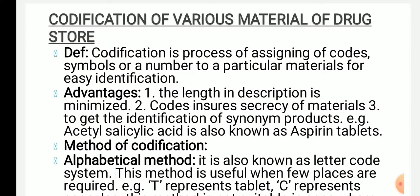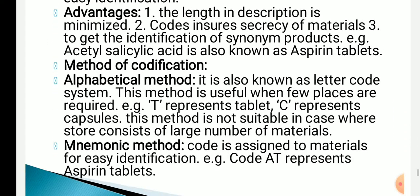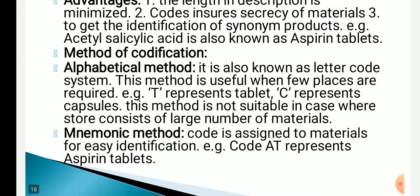Codification methods: first is alphabetical — also called letter code system. This method is useful when few places are required. For example, 'T' represents tablet, 'C' represents capsule, 'S' means syrups, 'O' means ointment.